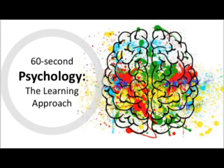In the same way, gendered behavior is learned through observation and imitation of models, particularly models of the same gender. It is also common for gendered behavior to be reinforced through operant conditioning, such as praising a girl for playing nicely with a doll while ignoring or mocking the same behavior shown by a boy.